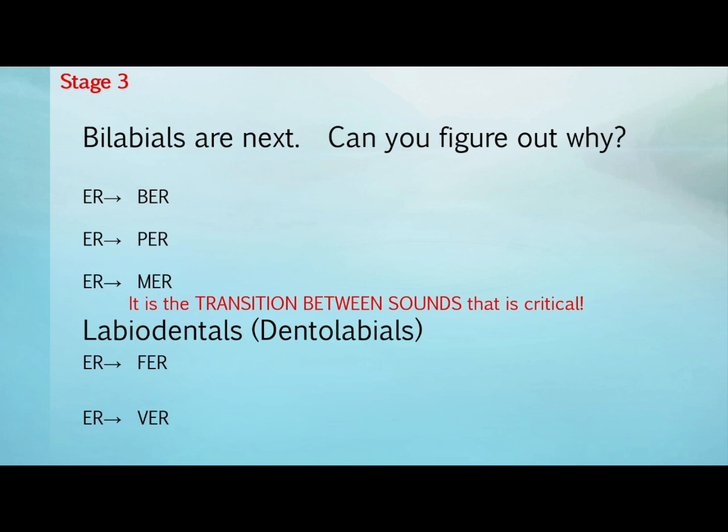Had we not eliminated the lip rounding initially, it would have continued to interfere with progress. Thinking through how other consonants are produced, it is easy to see why F and V — the labial dentals — are next in line to be co-articulated with ER, because again the tongue does not have to move from the F or V position to transition to the ER. This should be almost immediately mastered since the same conditions apply as with the bilabials.